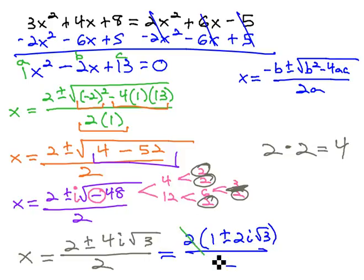Now that it's factored, we can divide out the factors of 2, giving us our final answer of 1 plus or minus 2i times the square root of 3.